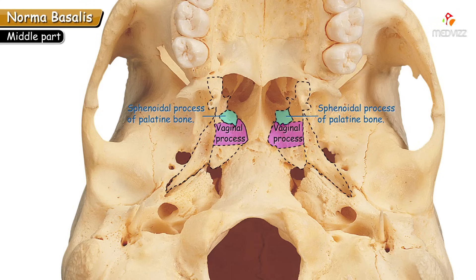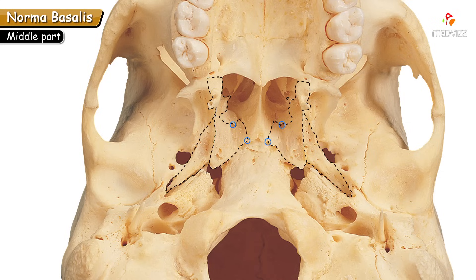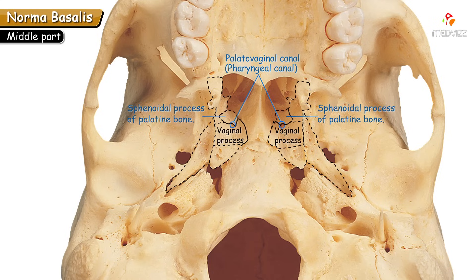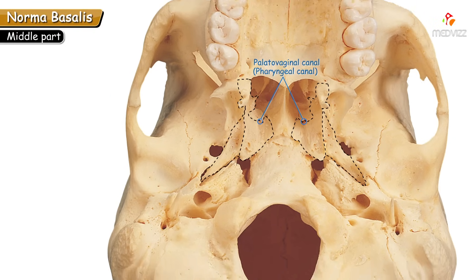The vaginal process of the medial pterygoid plate is associated with two tiny foramina. The anterior one is the palatino-vaginal canal (pharyngeal canal), and the vomero-vaginal canal is a tiny foramen lying slightly posterior to the pharyngeal canal. The pharyngeal canal is present between the vaginal process of the medial pterygoid plate and the sphenoidal process of the palatine bone — a gap that leads anteriorly into the pterygopalatine fossa.